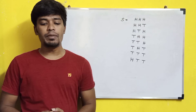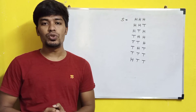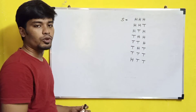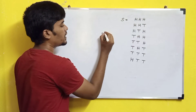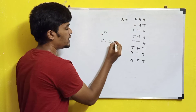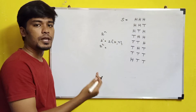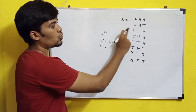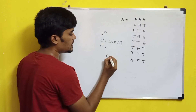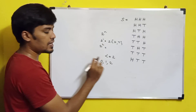The last question is: 3 unbiased coins are tossed. What is the probability of getting at most 2 heads? We first find the sample space for 3 coins using the formula 2 power n. For 3 coins, 2 power 3 equals 8, so there are 8 possible outcomes. At most 2 heads means less than or equal to 2 heads, so the number of heads can be 0, 1, or 2.